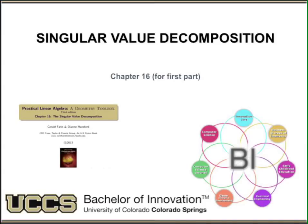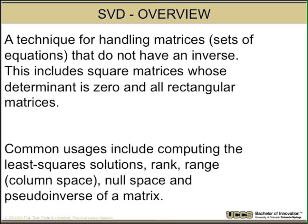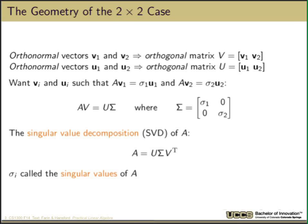First part of this, we'll be looking at the material from the book, and then we'll go outside the book and look at applications. So SVD is a technique for handling matrices, or a set of equations in the broader sense, that don't necessarily have an inverse. This includes square matrices, pseudo-determinants of zeros, and all rectangular matrices. Common usages for it include things like least-square solutions, rank and range computations, null space, pseudo-inverse of a matrix, solving equilibrium equations, which we'll all talk about in the second part. But let's look at what SVD is and how we compute it.